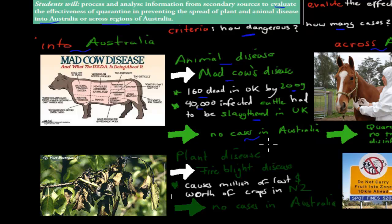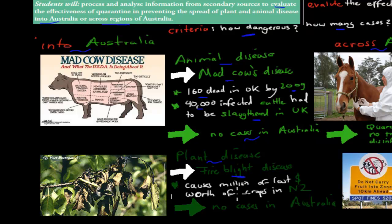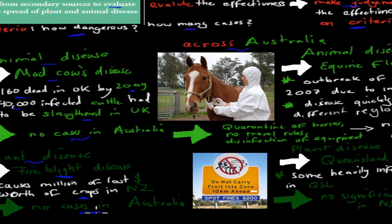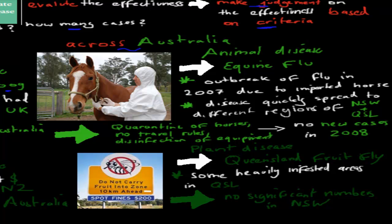We don't have any cases, and thereby we don't have any danger. Those are two examples of how we prevented the cow disease from becoming a big problem in Australia through quarantine, because we're very strict on what comes in when it comes to meat products from the UK. Another example is a plant disease — fire blight disease is a big problem in New Zealand, causing millions of dollars in lost crops such as apple and pear crops. But it's no problem at all in Australia because we have very strict regulation on what can come in from New Zealand. So our quarantine measures are successful.